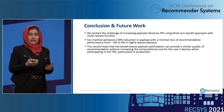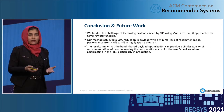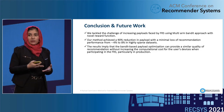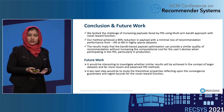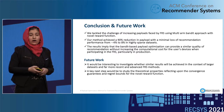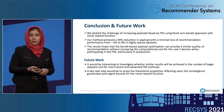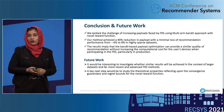In summary, we tackled the challenge of increasing payloads using multi-armed bandit with a reward function, and our method achieved 90% reduction in payload with minimum loss of recommendation performance. As future work, it would be interesting to investigate whether similar results are achieved with larger datasets or more advanced federated recommender systems. The next step would be to study the theoretical properties reflecting upon convergence and the regret bounds for the reward function.